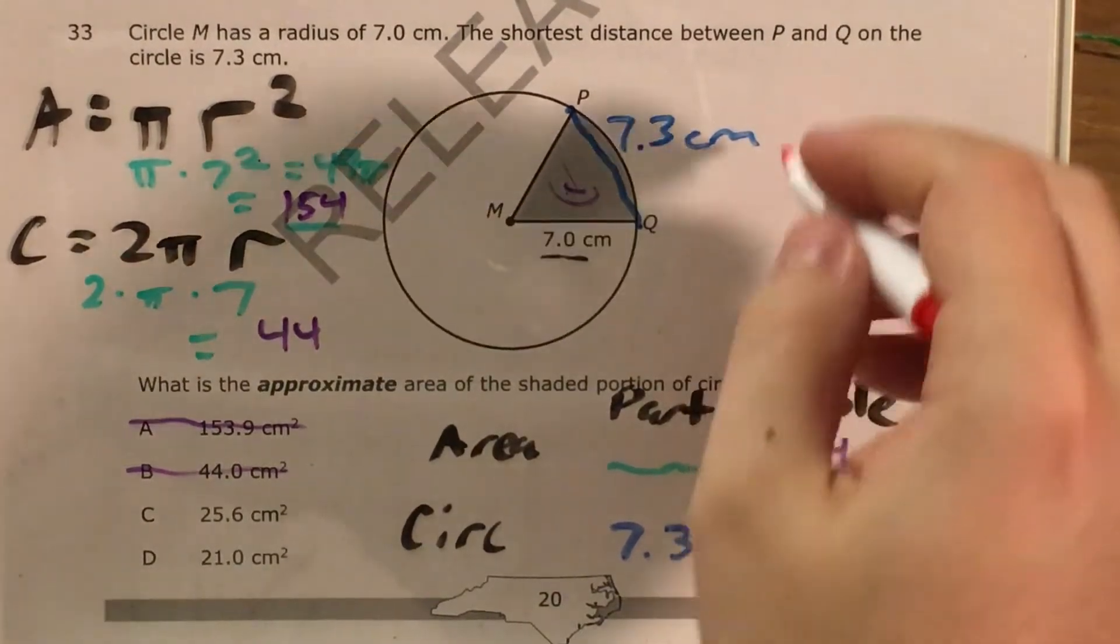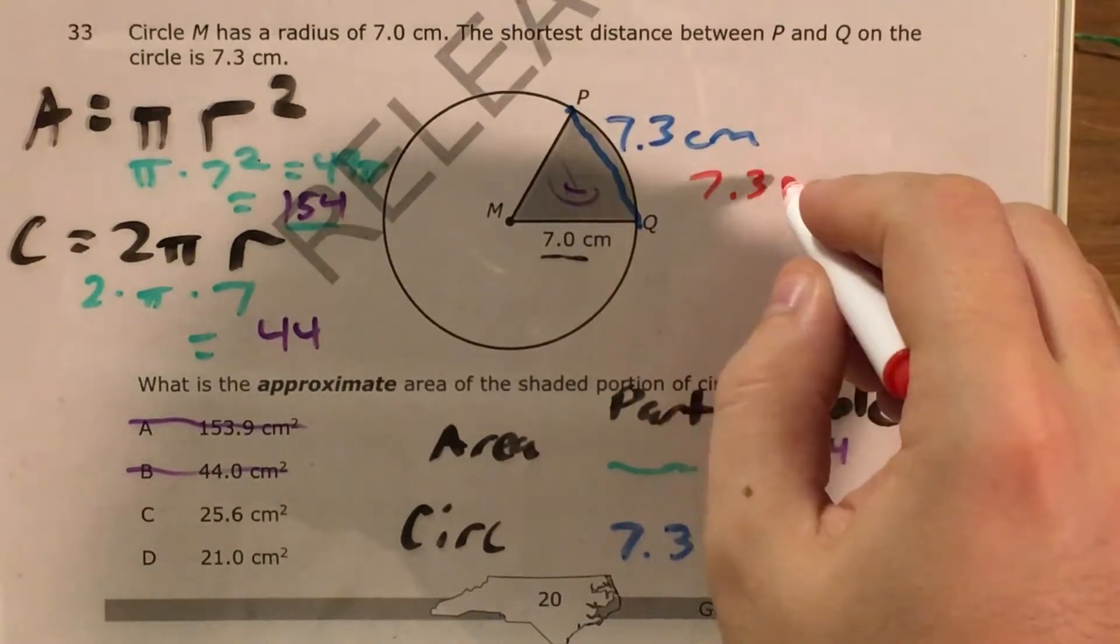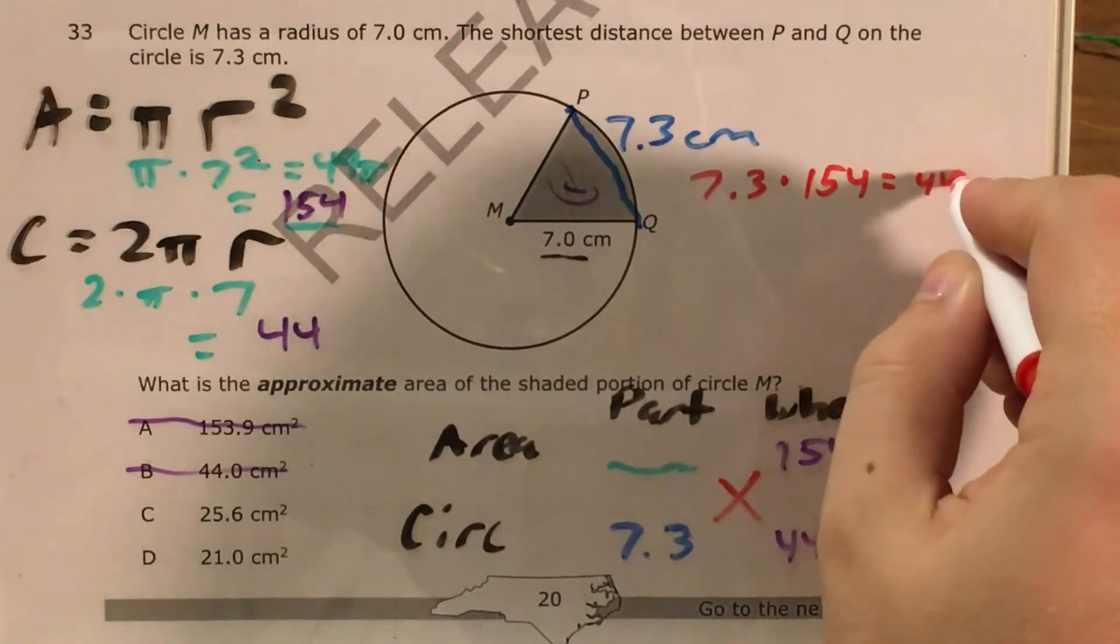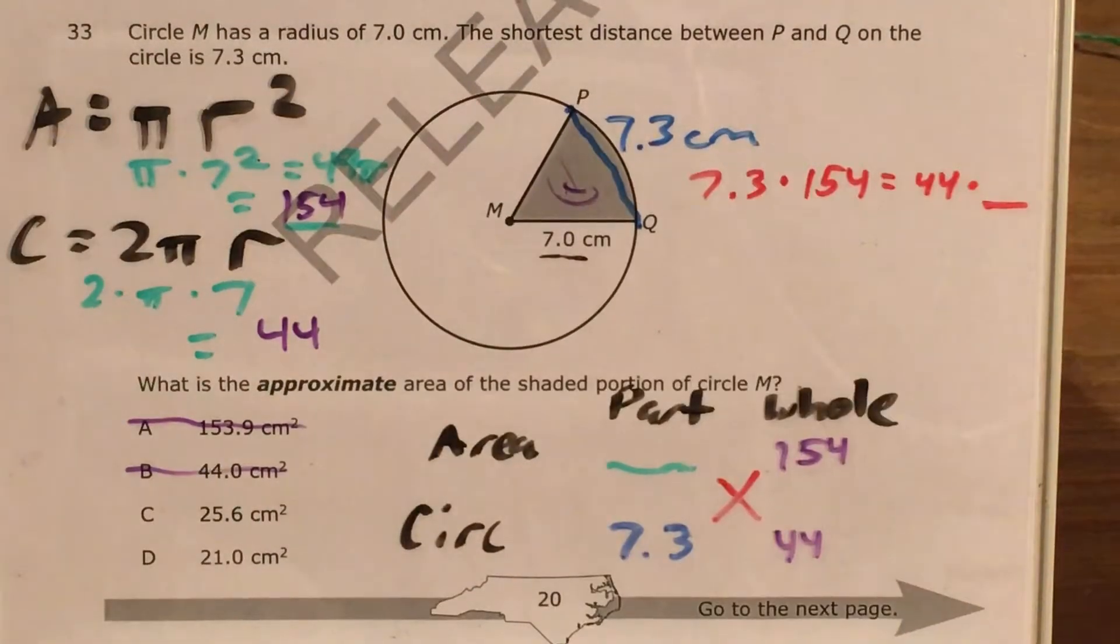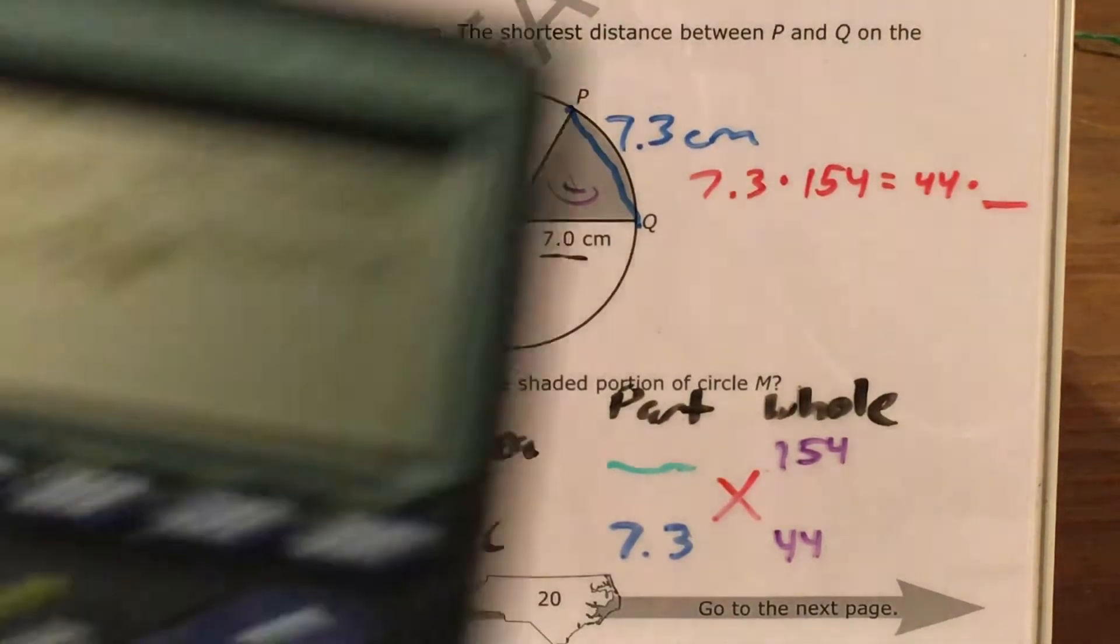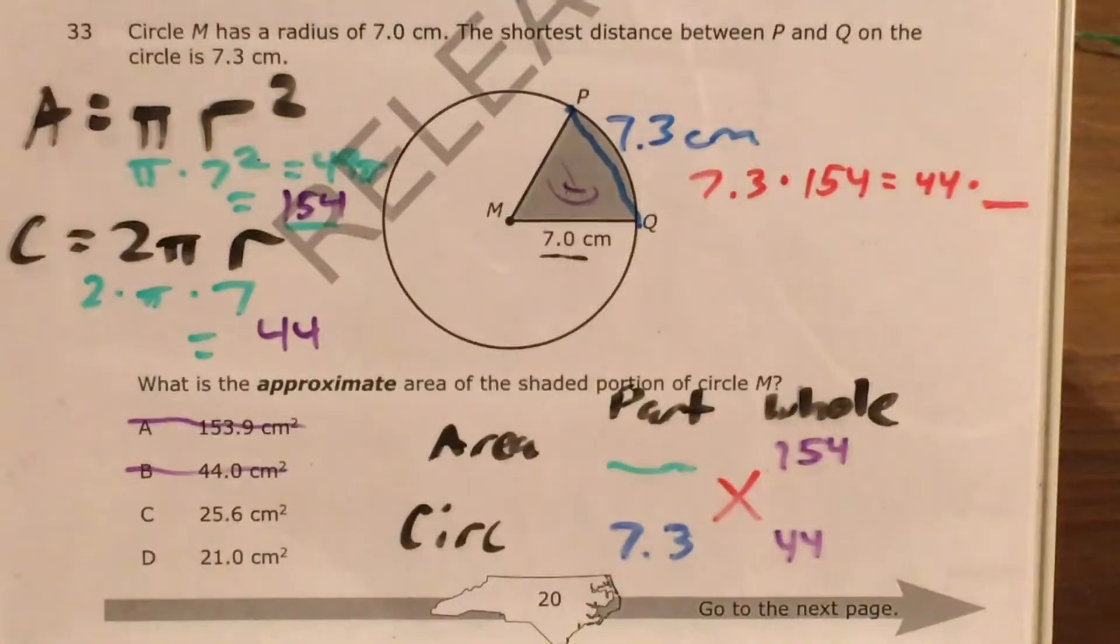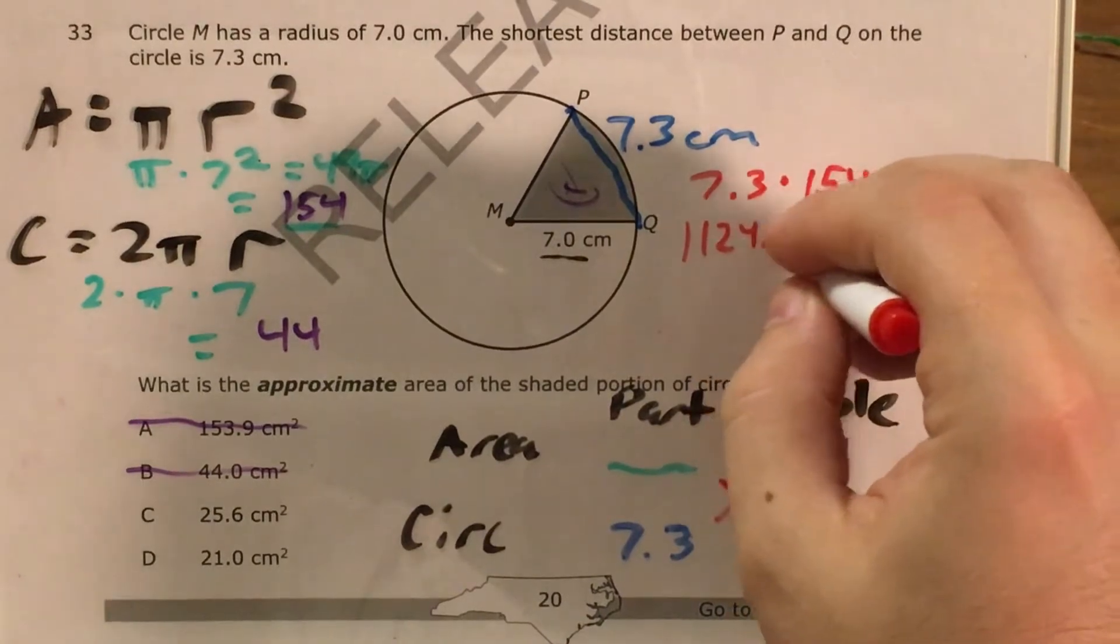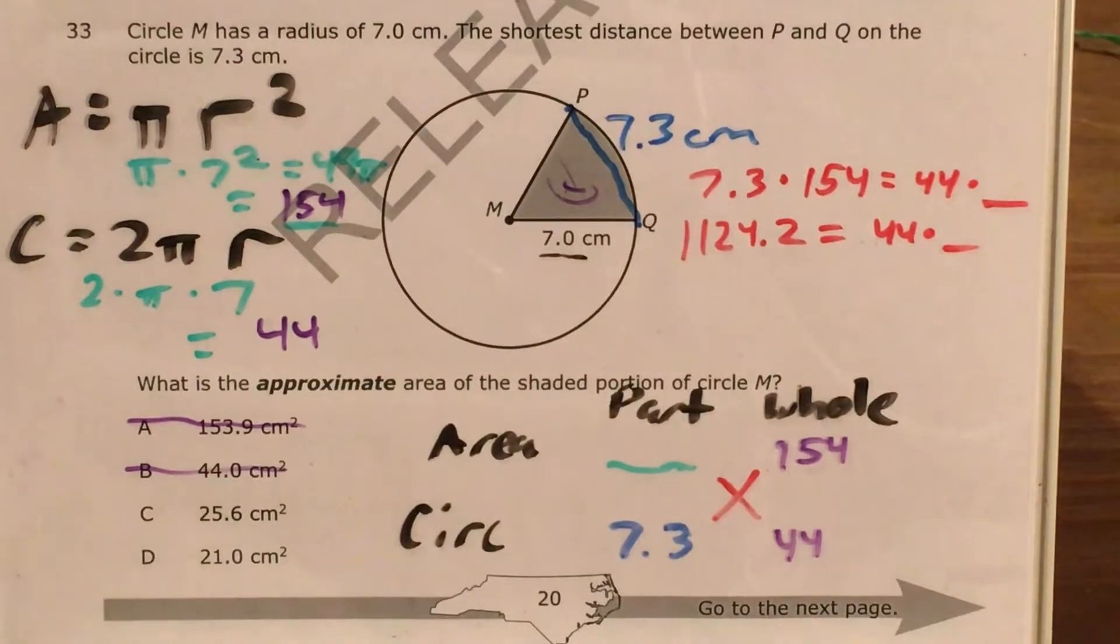Cross-multiply here and here, and I'm going to have to come up here to do this work, and I say that 7 and 3 tenths times 154 equals 44 times this number that I don't know yet. I use my calculator to say that 7 and 3 tenths times 154 is 1,124.2.